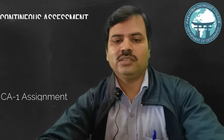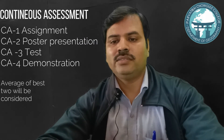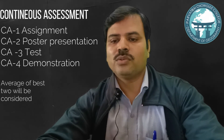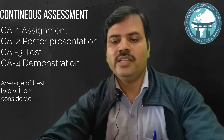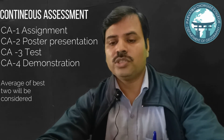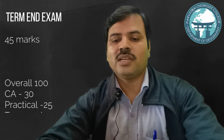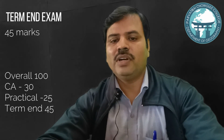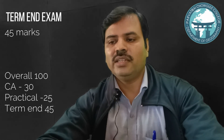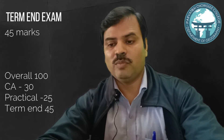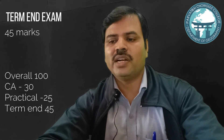In total, there will be four continuous assessments. CA1 will be an assignment, CA2 will be a poster presentation, CA3 will be a short answer test, and CA4 will be a presentation or demonstration of a practical exercise or tool learned during the course, demonstrated to the group. At the end of the semester, the examination conducted by the college will be 45 marks. The average of the best two CAs will be equivalent to 30 marks, and the practical component covers 25 marks, making the overall course 100 marks.